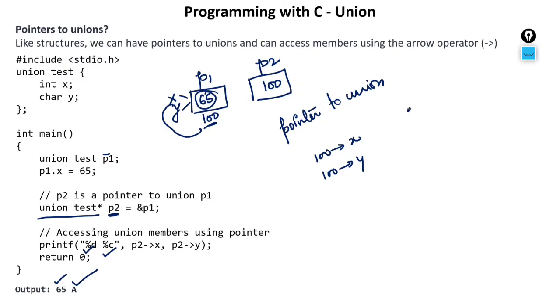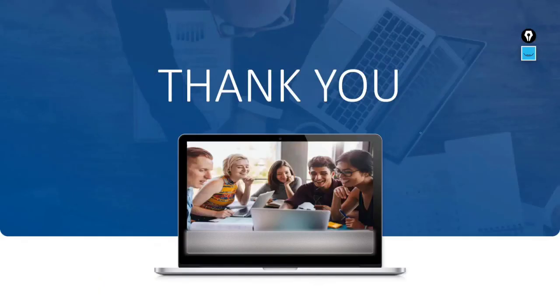So what I was trying to tell you is that members of a union can be accessed through two operators: one through dot, and one through arrow — which is the minus sign followed by the greater-than sign. Thank you so much.